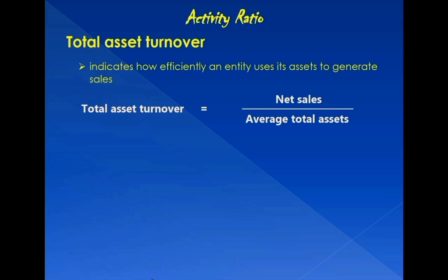In some textbooks, receivables turnover, inventory turnover, and trade payables turnover are classified as activity ratios but not directly identified among the liquidity ratios. However, since each involves either current assets or current liabilities — receivables and inventories being current assets, and trade payables being a current liability — all three also fall under liquidity ratios. Total asset turnover is only an activity ratio, not a liquidity ratio, because total assets include non-current assets.